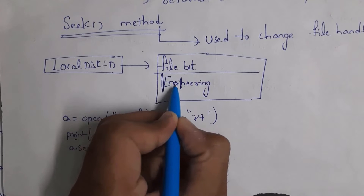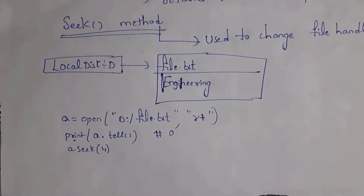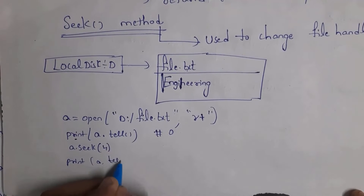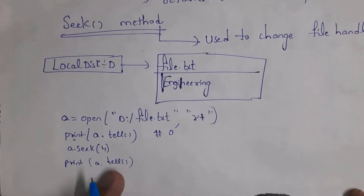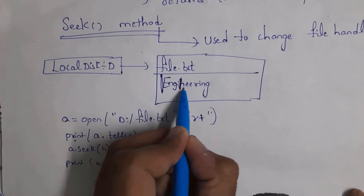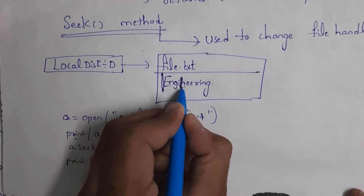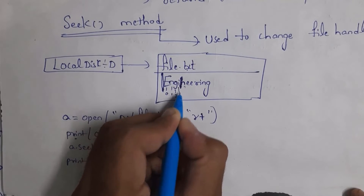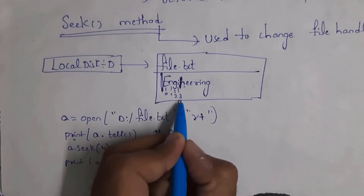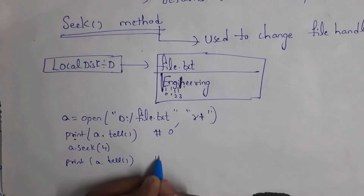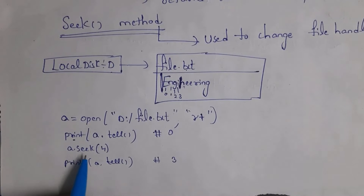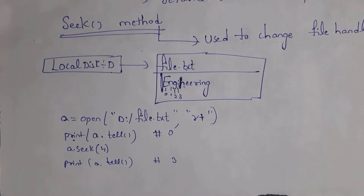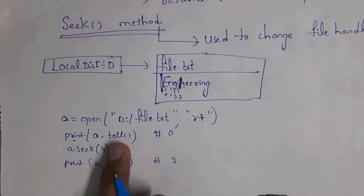The characters are E, N, G, I — it will place the cursor here, after the 4th character. Again, I want to identify the cursor position, so write here print(a.tell). The tell method is used to identify cursor position. Now my cursor is here in place of N. My cursor is at the 4th position: E is at index 0, N at index 1, G at index 2, and I at index 3. So my cursor is at index number 3, and I will get output 3.